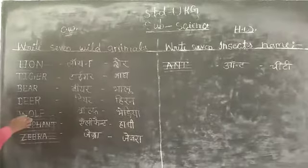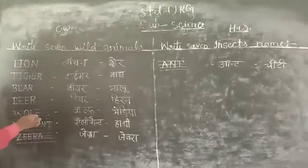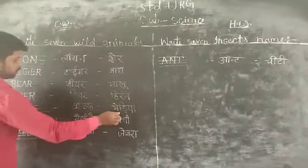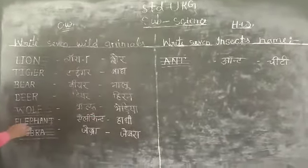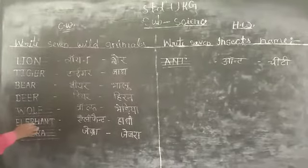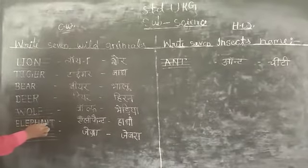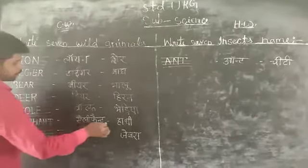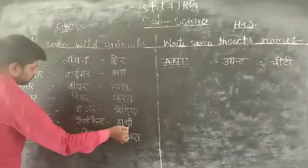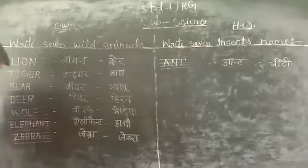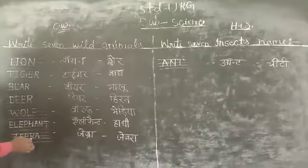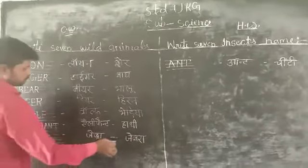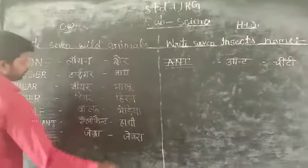Wolf: W-O-L-F. Elephant: E-L-E-P-H-A-N-T, elephant. Zebra: Z-E-B-R-A, zebra.